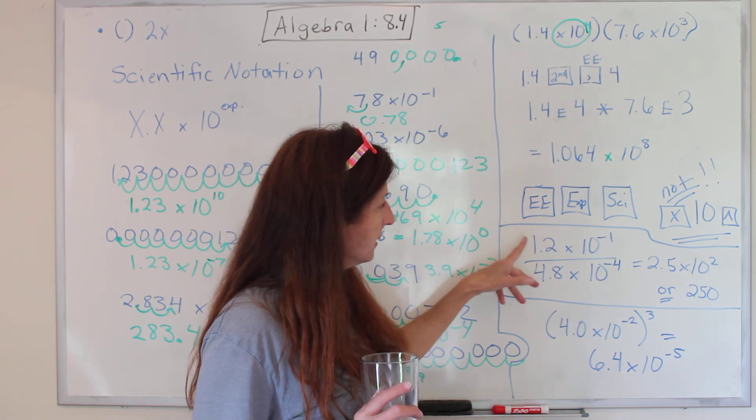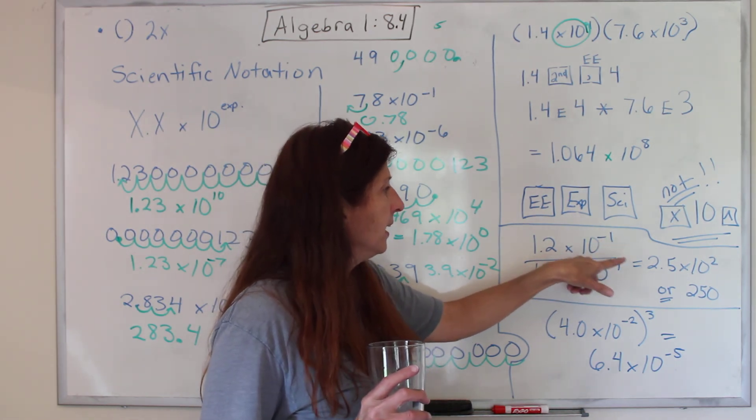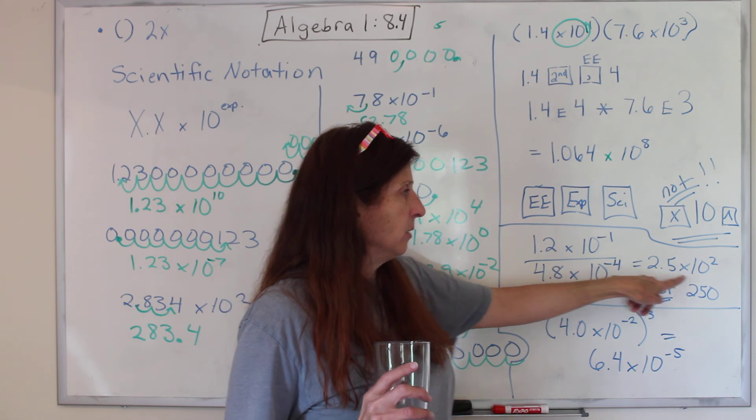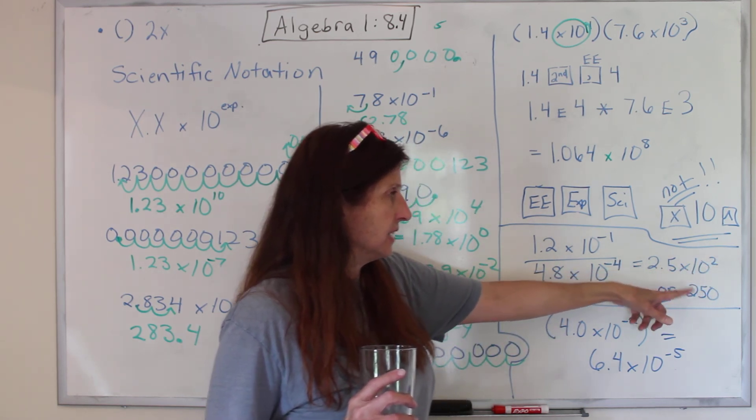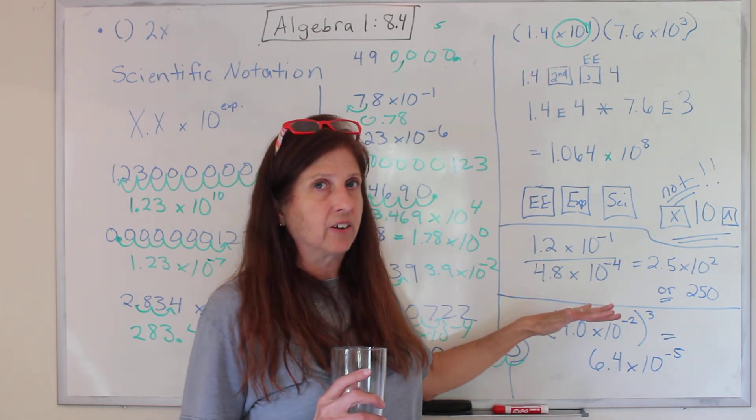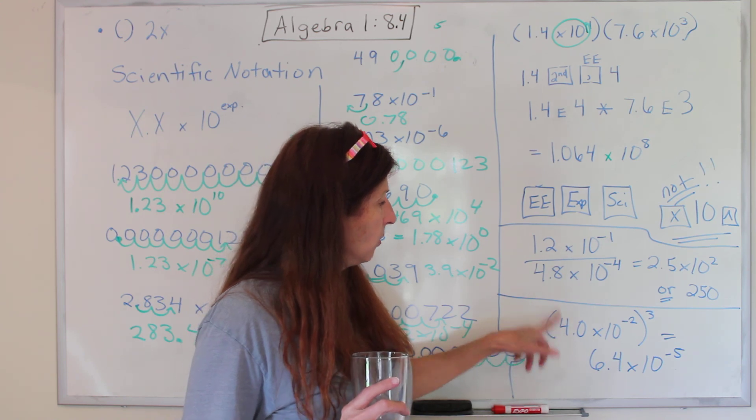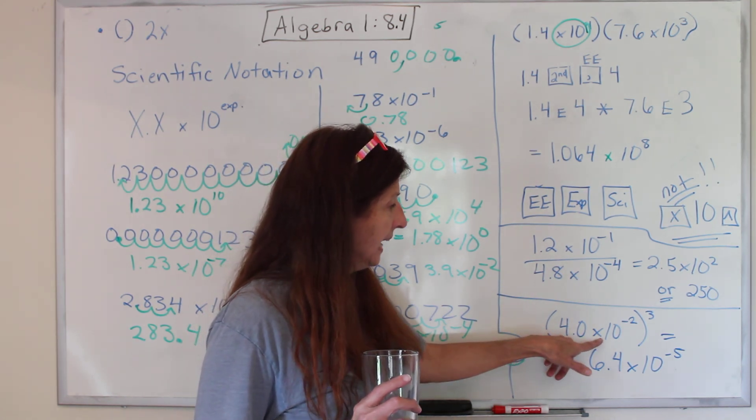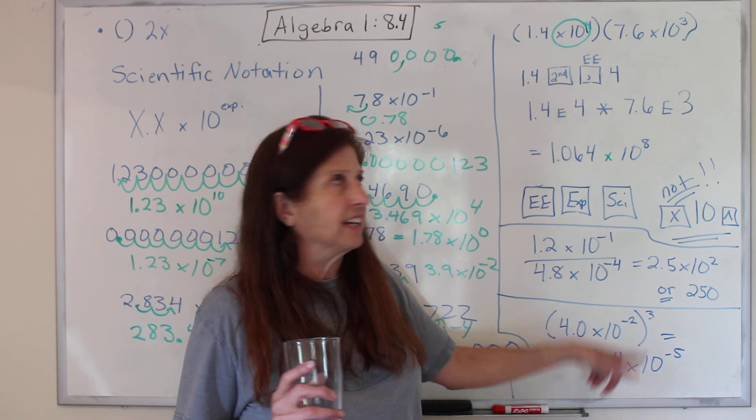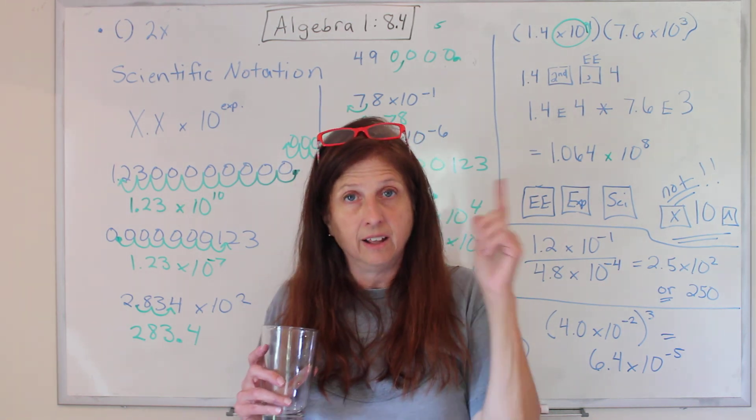So this one, if you put this on your calculator, you would do 1.2, second comma for the EE, then negative 1 divided by 4.8, second comma for the EE, negative 4, hit enter. It might tell you this, 2.5 times 10 to the second power, but it would probably say 250. I want you to practice these and make sure you can do it on your calculator. It's a little complicated. This one, you would put this exactly on your calculator, beginning parentheses, 4.0, EE negative 2, in parentheses, up arrow 3, equals, and you should get this. Practice all of those and make sure you can get the right answer on your calculator. Mess with it till you can. Math is great.